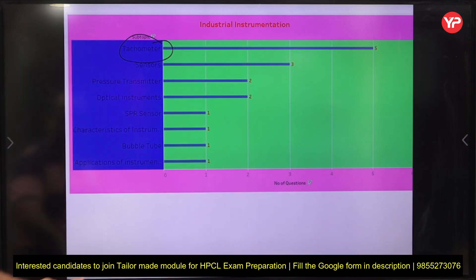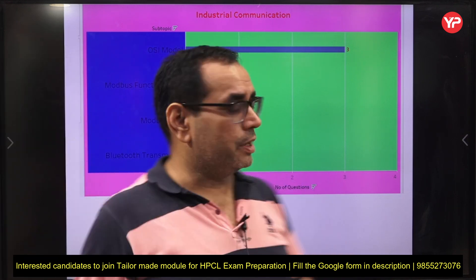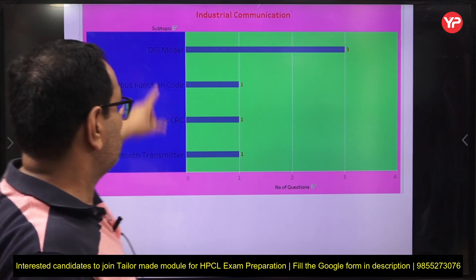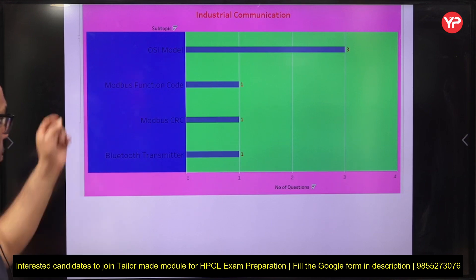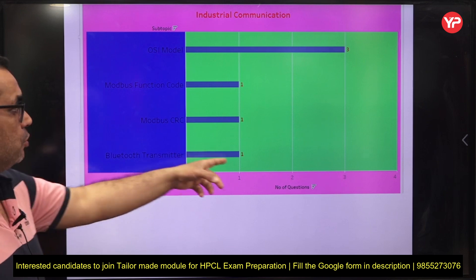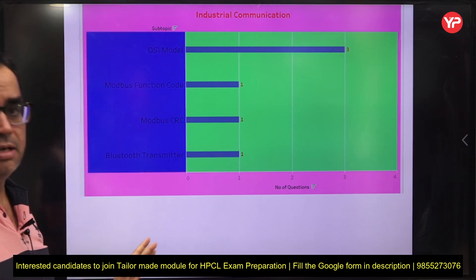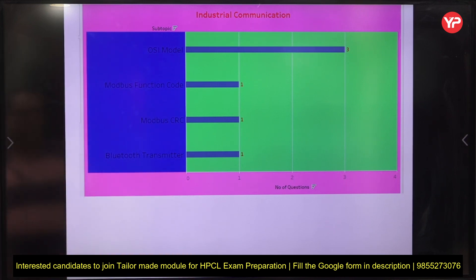Industrial communication is also important — don't skip it. The OSI model had three questions, which is the most important part of industrial communication. There was one question on Modbus function code, one on Modbus CRC, and one on Bluetooth transmitter. Mainly focus on the OSI model and its different protocols for this section.